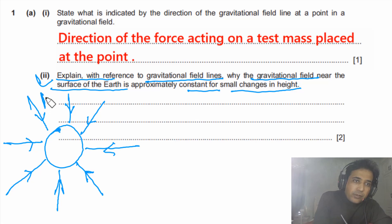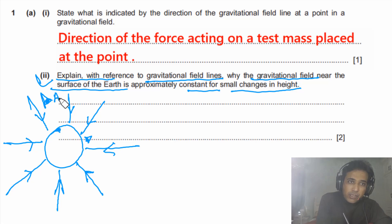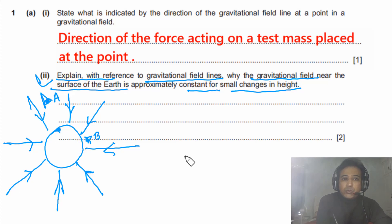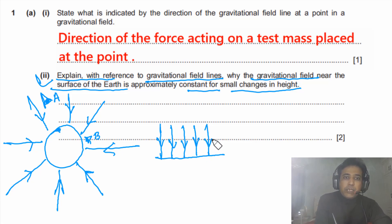Observer A is far away from the planet, and observer B is very close to the surface. Observer B, being very close to the surface, will see the gravitational field as uniform — the field lines appear parallel and evenly spaced from their perspective.